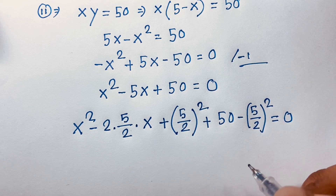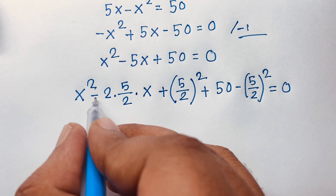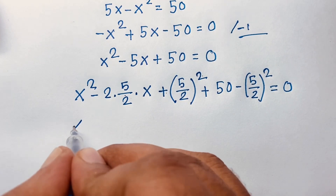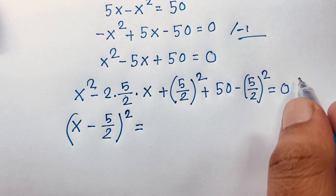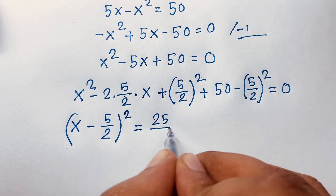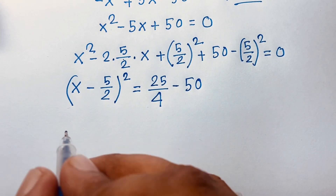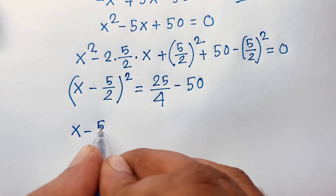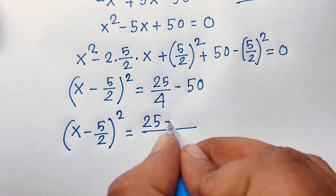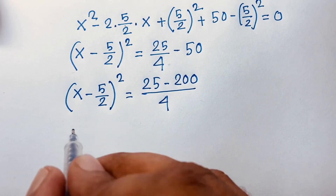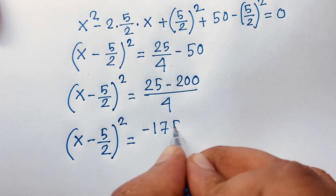You can also use the quadratic formula x equals minus b plus or minus root of b squared minus 4ac over 2a. Here, since a squared minus 2ab plus b squared equals (a minus b) squared, we move the constant to the other side. We get (x minus 5/2) squared equals 25/4 minus 50. Since 4 times 50 is 200, we have 25 minus 200 over 4, which gives minus 175 over 4.